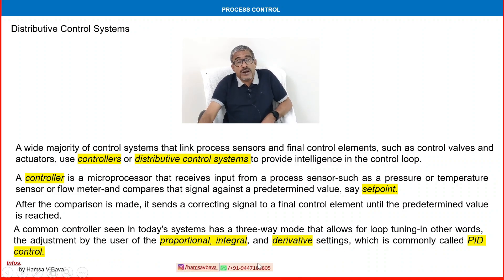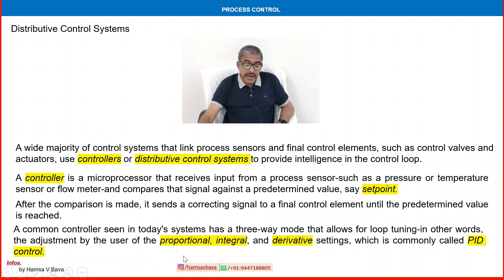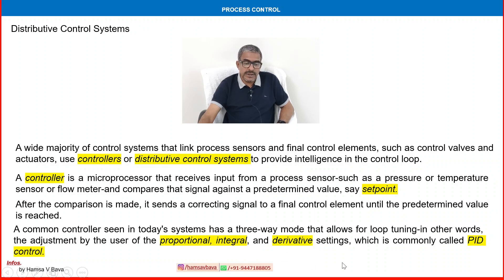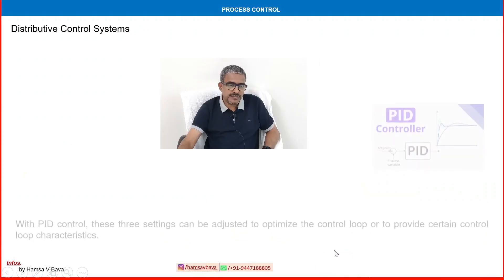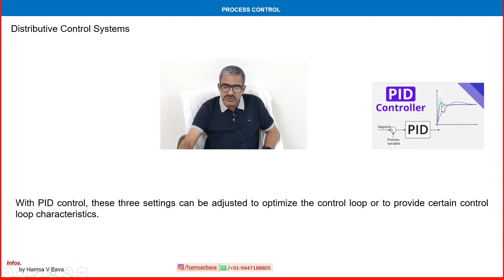A common controller seen in today's systems has a three-mode capability that allows for loop tuning — in other words, the adjustment by the user of the proportional, integral, and derivative settings, mainly called PID. Earlier, control valves used either proportional, integral, or derivative alone, but now advanced PID controllers are combining all three. With PID control, these three settings can be adjusted to optimize the control loop or to provide certain control loop characteristics.